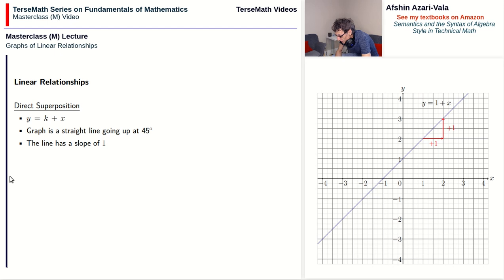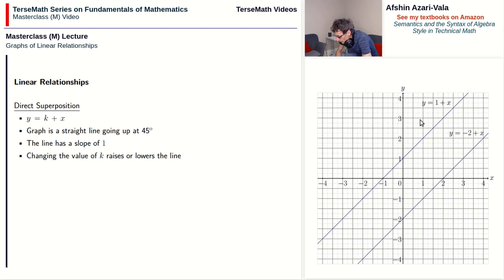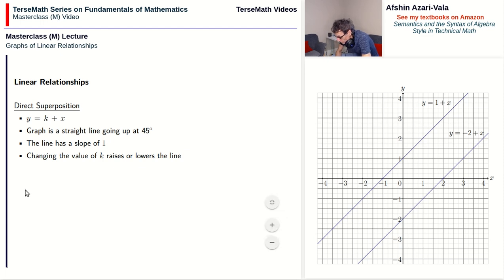The effect of changing the value of k is pretty interesting. If you raise the value of k, the line as a whole moves up. For example, comparing y equals 1 plus x (k equals 1) and y equals negative 2 plus x (k equals negative 2), you notice that as k goes from negative 2 to 1 — that is, as its value increases — the line as a whole moves up.